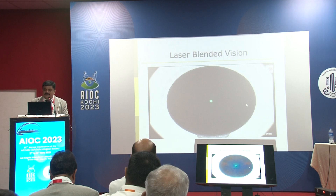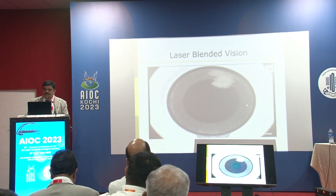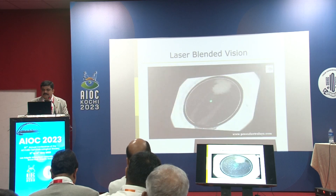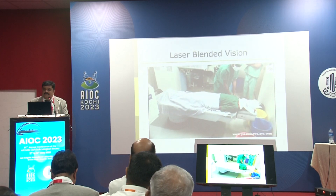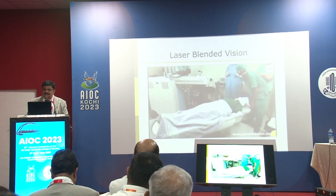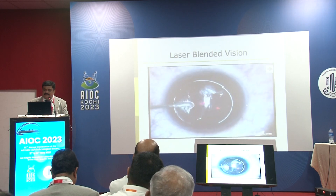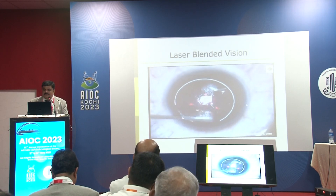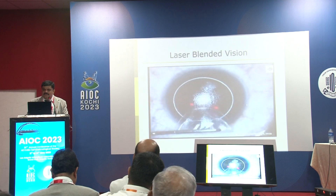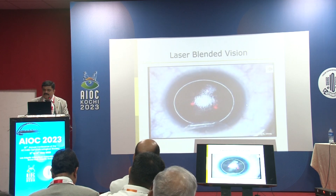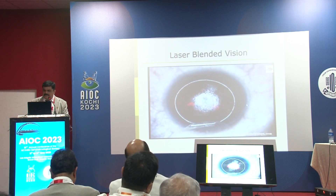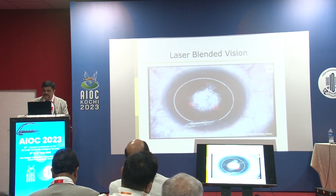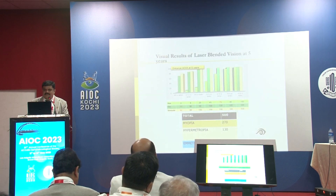For the procedure, I use the VisuMax 500 femtosecond laser — the VisuMax 500 or 800 is one of the best femtosecond machines available. Once the femto flap is done, the patient moves under the excimer laser — this can be done with the MEL 90 as well. After flap creation, lift the flap, and the treatment is similar to any LASIK treatment — the treatment plan is done by the machine. Once the treatment is done, the flap is repositioned.